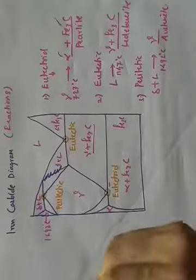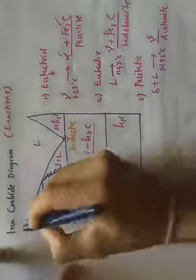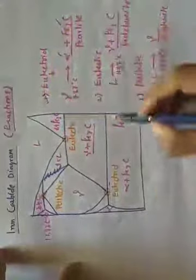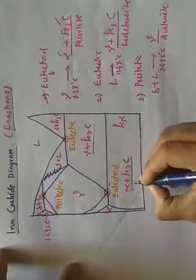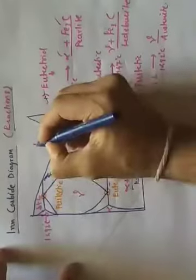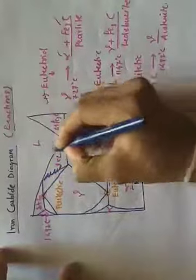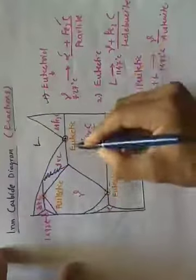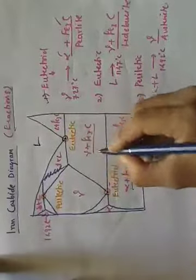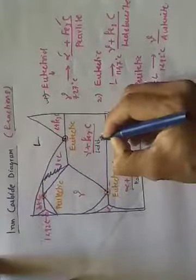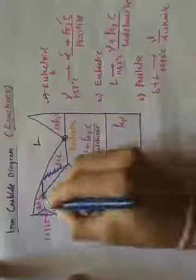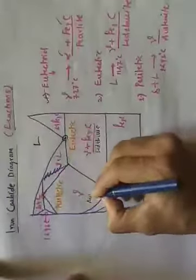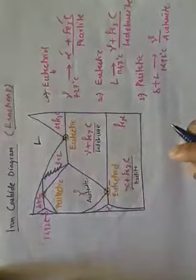To summarize the different reactions from the iron-carbon diagram: first, the eutectoid point, in which austenite converts into alpha plus Fe3C, called pearlite. Second, the eutectic point, in which liquid around 1147°C converts into gamma plus Fe3C, called ledeburite. Third, the peritectic point, in which delta plus liquid provides austenite. Thank you for this session.